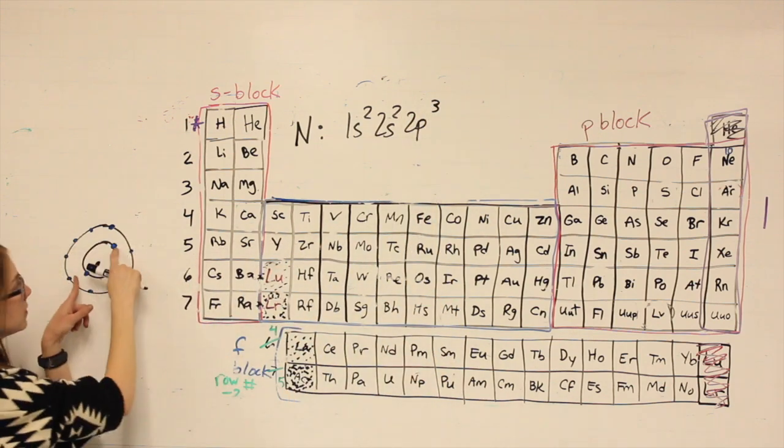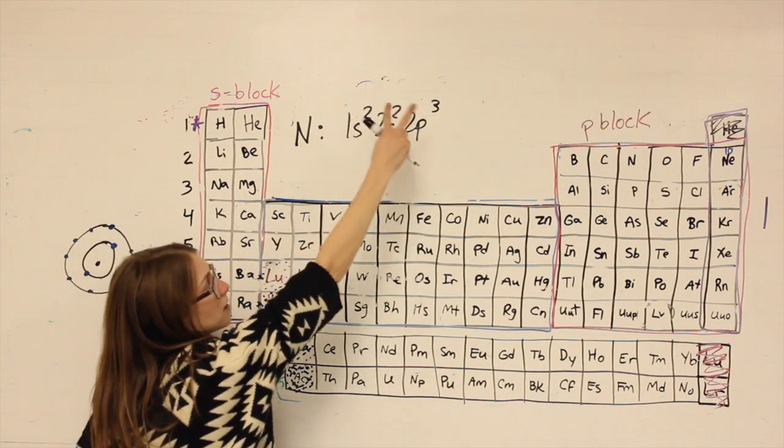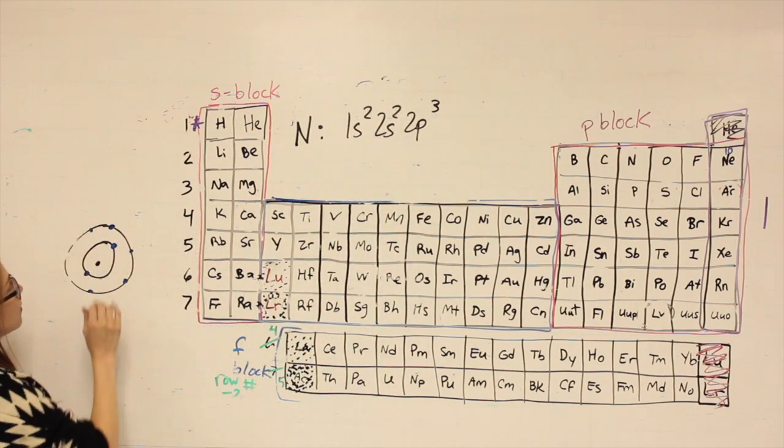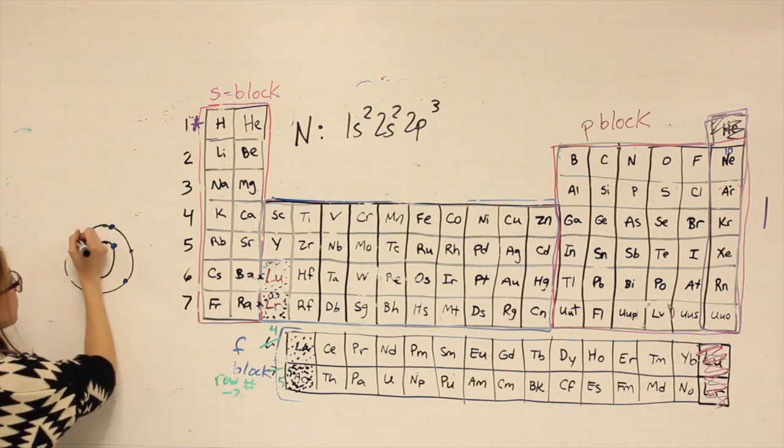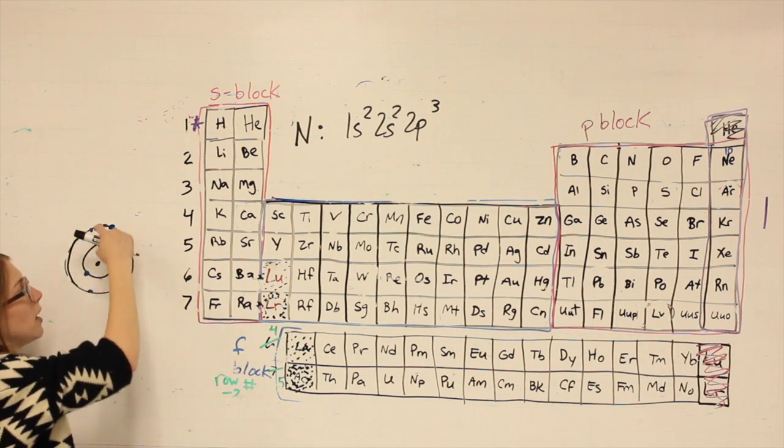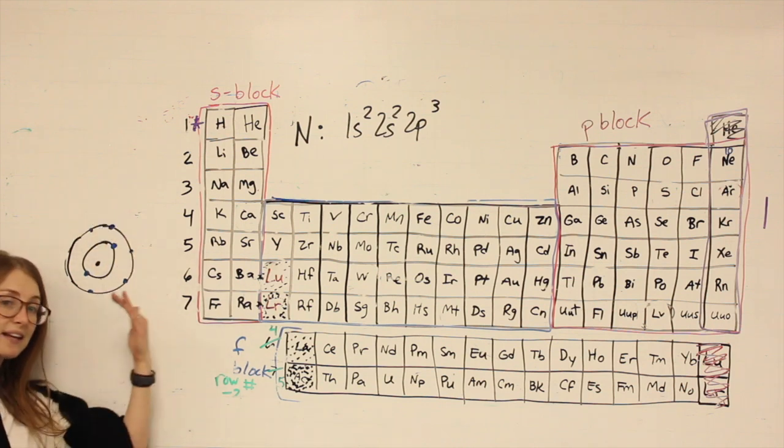Nitrogen would have still two electrons in that first shell, but only five in the outermost shell. So now this is the picture of nitrogen. Two in the innermost shell, 1, 2, 3, 4, 5 in the outermost shell.